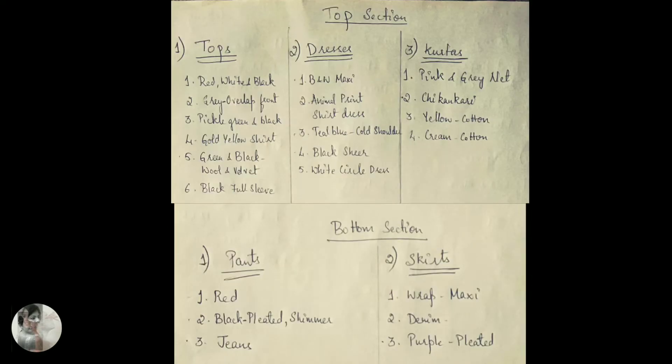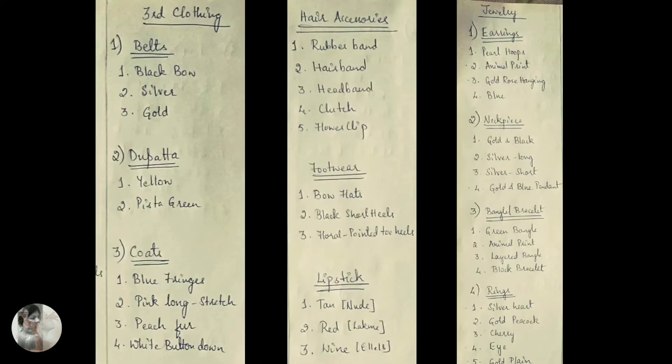Under the top section, I have three subcategories: top, dress, and kurti. Under bottoms, pants and skirts. The third piece of clothing has three subcategories: belt, dupatta, and coats. For footwear, I have three choices. Jewelry categories are earring, neck piece, bangle, bracelet, and ring. Since explaining all of this would take a long time, I'll explain the random number generator process for one day's outfit, and the rest follows the same process.